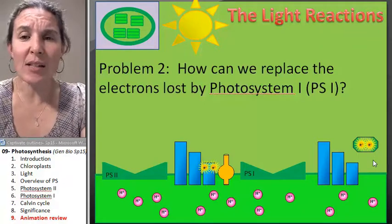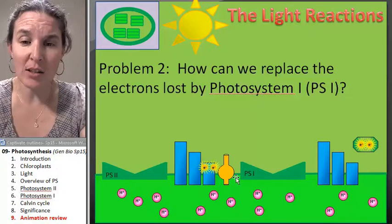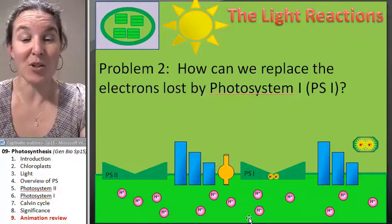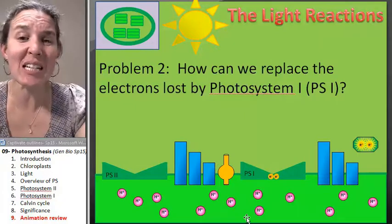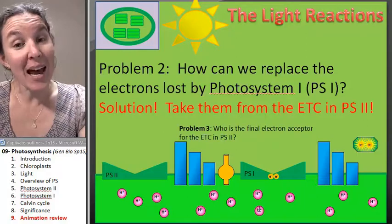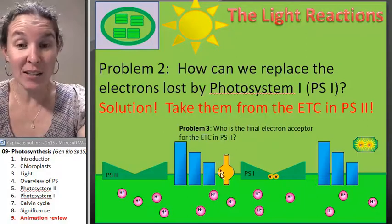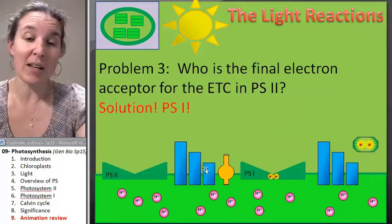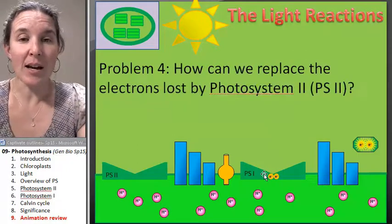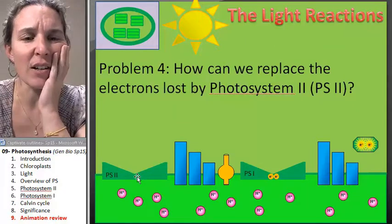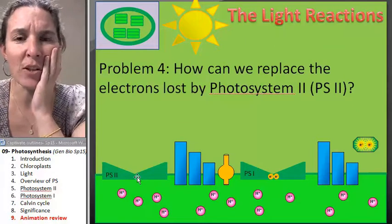So now let's replace the electrons lost by photosystem one. Where are they going to come from? They're coming from photosystem two. That's a perfect deal. That's a perfect solution. And now who's going to be the final electron acceptor for photosystem two? We already know that as well. That's photosystem one. And finally, how are we going to replace these electrons here? We're almost perfect. We've almost got this under control.